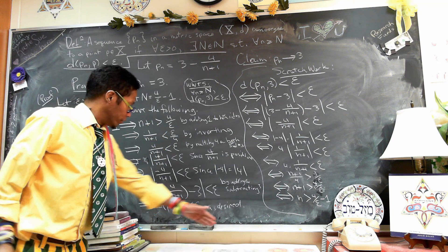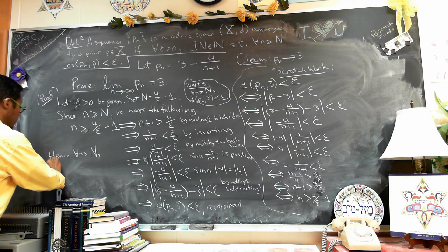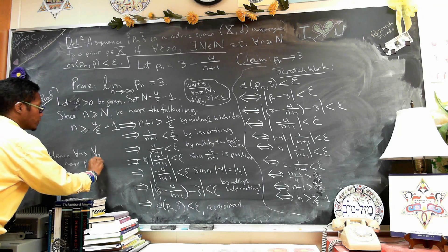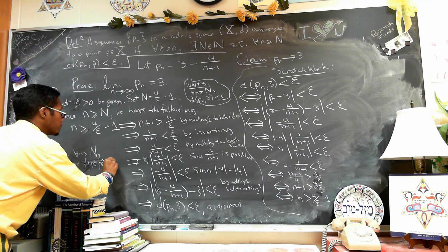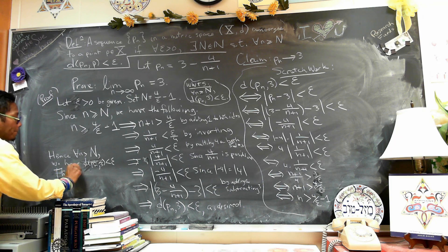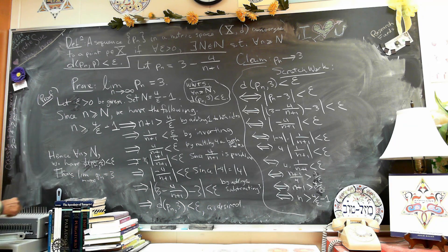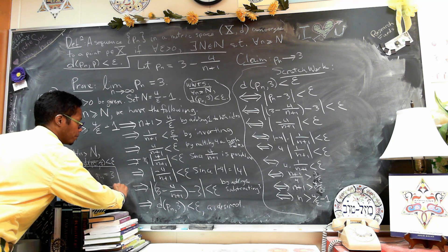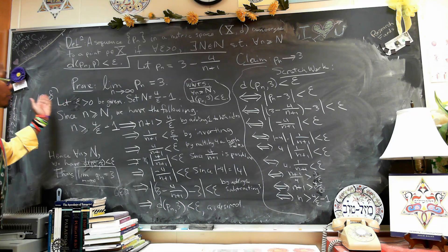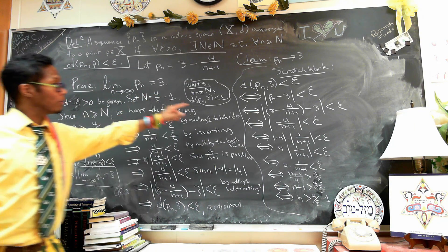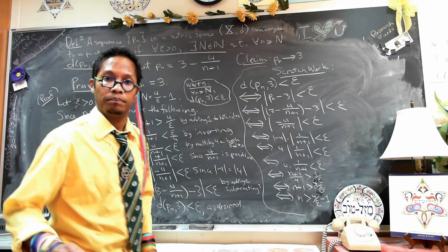We should always end the proof by stating what we have shown. Hence, for all n greater than N, we have the distance from P_n to 3 less than epsilon, and thus the limit as n goes to infinity of P_n equals 3. QED. That's the way we finish these proofs — we go through the scratch work and then run it backwards. The miracle is the N that we derive from the scratch work; from that point on, if N is correct, most of the proof follows.